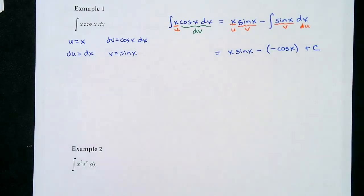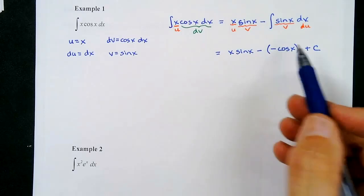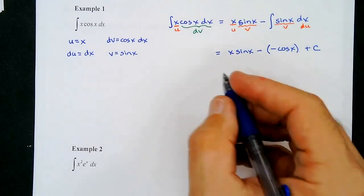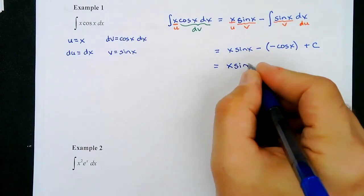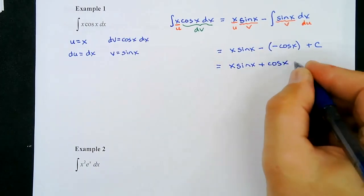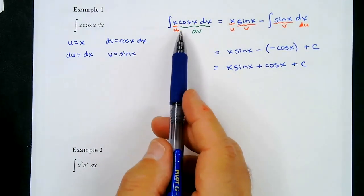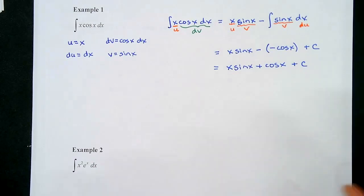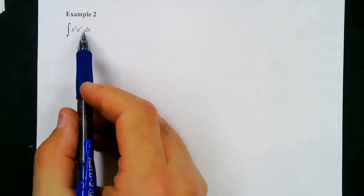Subtracting a negative becomes addition, so the final answer is x·sin(x) + cos(x) + C. That's the integral of x·cos(x)·dx. Next problem: the integral of x²·eˣ·dx.